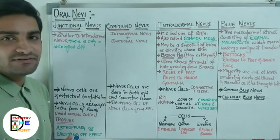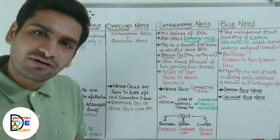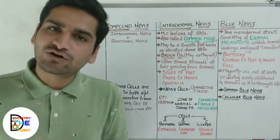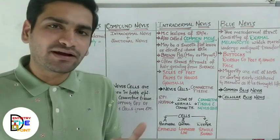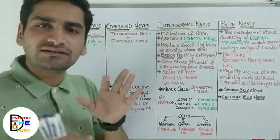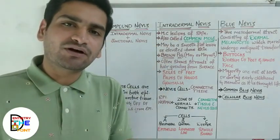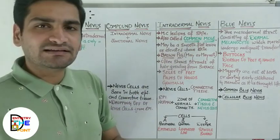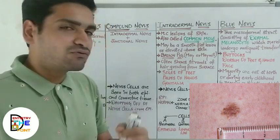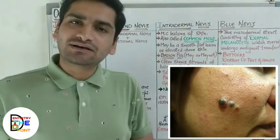Starting with intradermal nevus — the nevus cells have already crossed the basal layer of the epithelium and entered into the connective tissue. Intradermal nevus represents the most common lesions of skin — the common mole, which you are well aware of. It may be a smooth flat lesion or elevated above the skin surface.